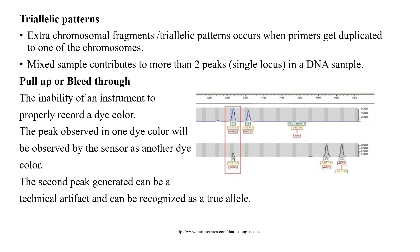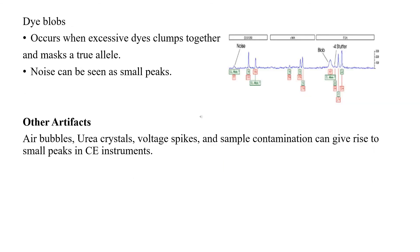Pull-up or bleed-through refers to the inability of an instrument to properly resolve a dye color. The peak observed in one dye color will be recorded by the sensor as another dye color. A second peak may be generated as a technical artifact, and this artifact can go unrecognized, with the two peaks being mistaken as two alleles. This occurs when excessive dyes clump together and mask a true allele.